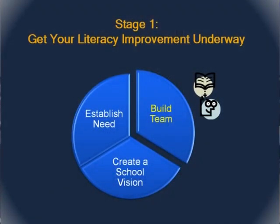Stage one has three pieces. First: build your literacy leadership team. Second: create a vision for a literacy-rich school. Third: establish and communicate the need for literacy improvement. The literacy team should be representative of the entire school community. Some call them literacy commissions or reading leadership teams. I prefer 'literacy team' because it broadens it beyond just reading to include writing, learning, and thinking.